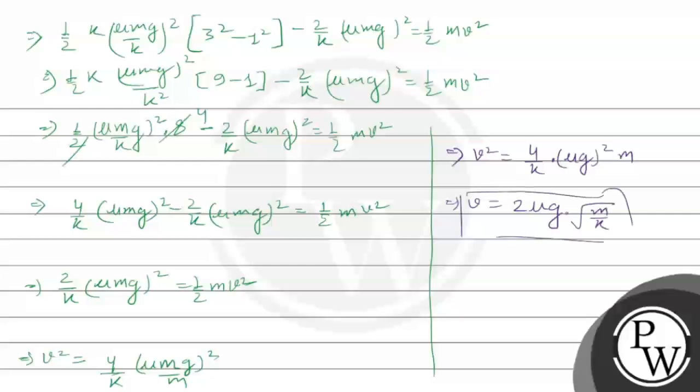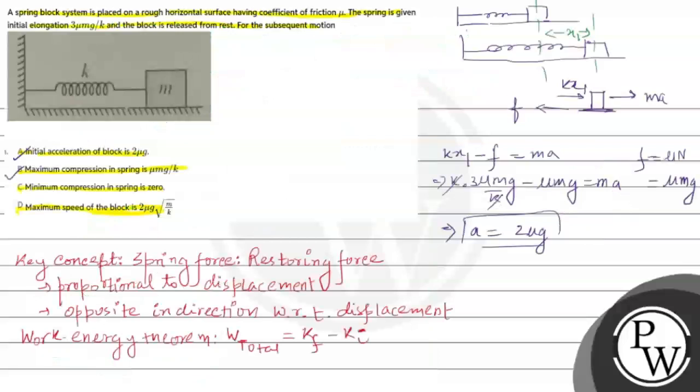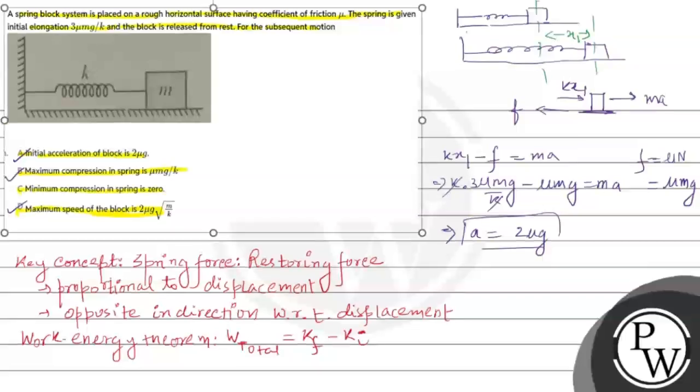This is the velocity and if we see option D it is correct answer. So this is our final answer: option A, B, D is correct. Hope you have understood it well and best of luck.